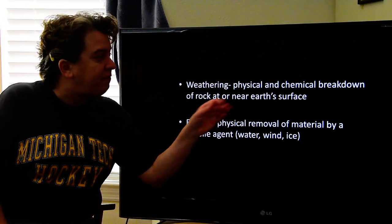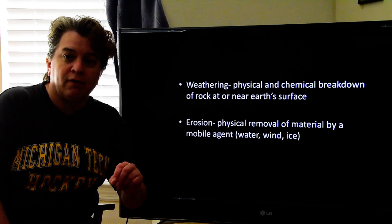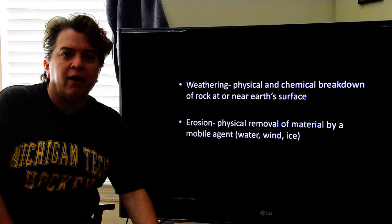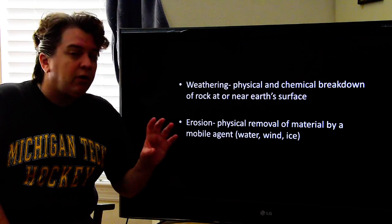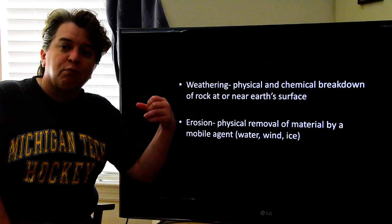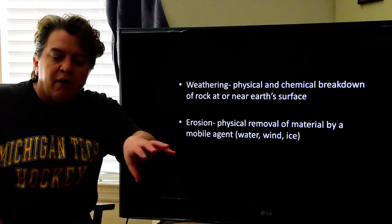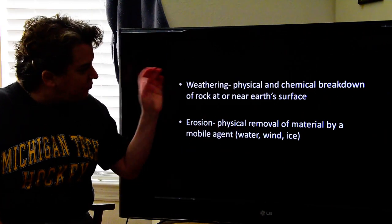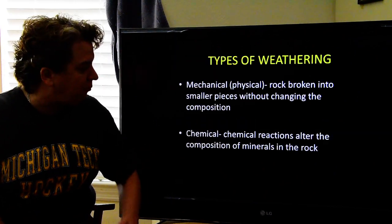Weathering is the physical and chemical breakdown of rock at or near Earth's surface. This isn't something that happens deep underground — this is happening right here where we live on the surface. You will often hear weathering and erosion used together. Weathering is breaking apart the rocks. Erosion is when those broken-up bits and pieces get removed from a location. So first it gets broken apart, then those broken pieces get carried away somewhere.